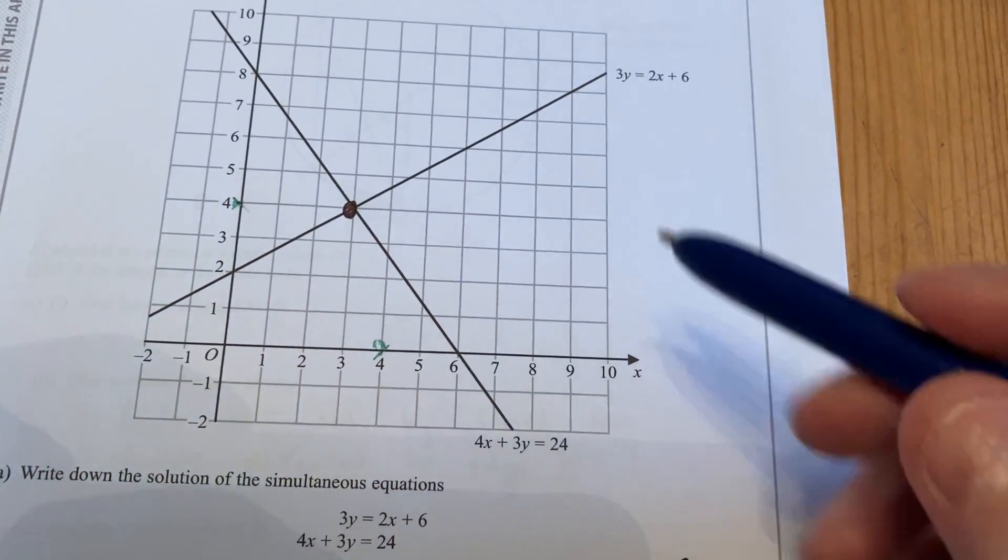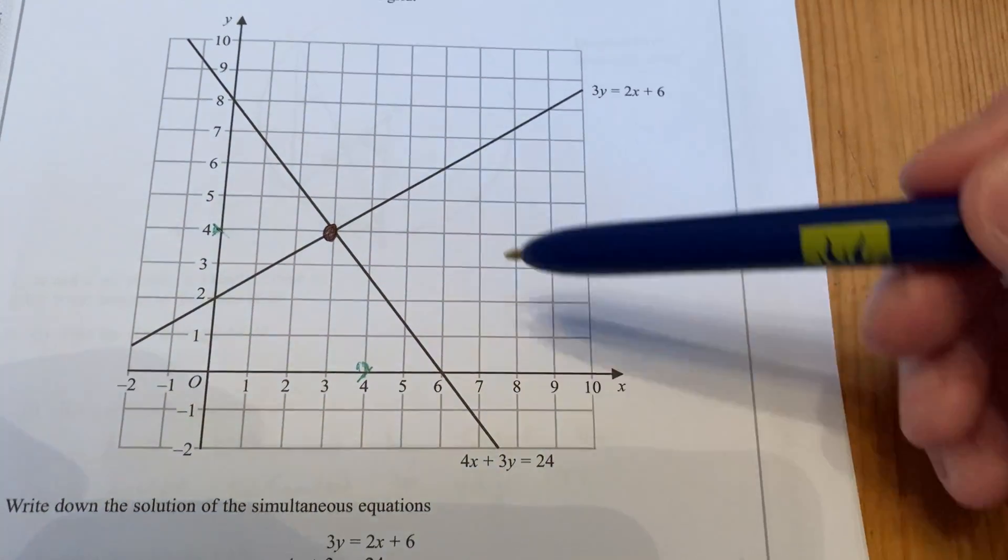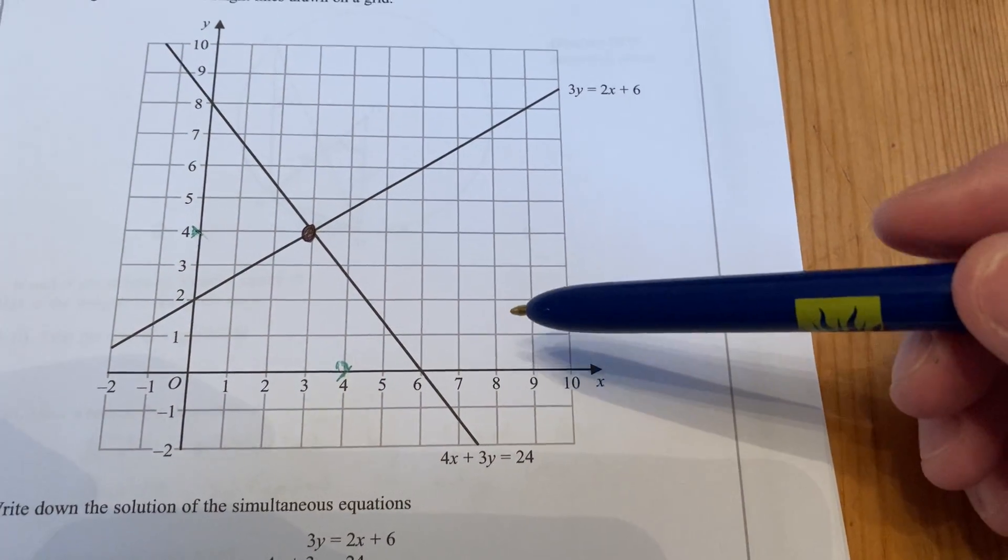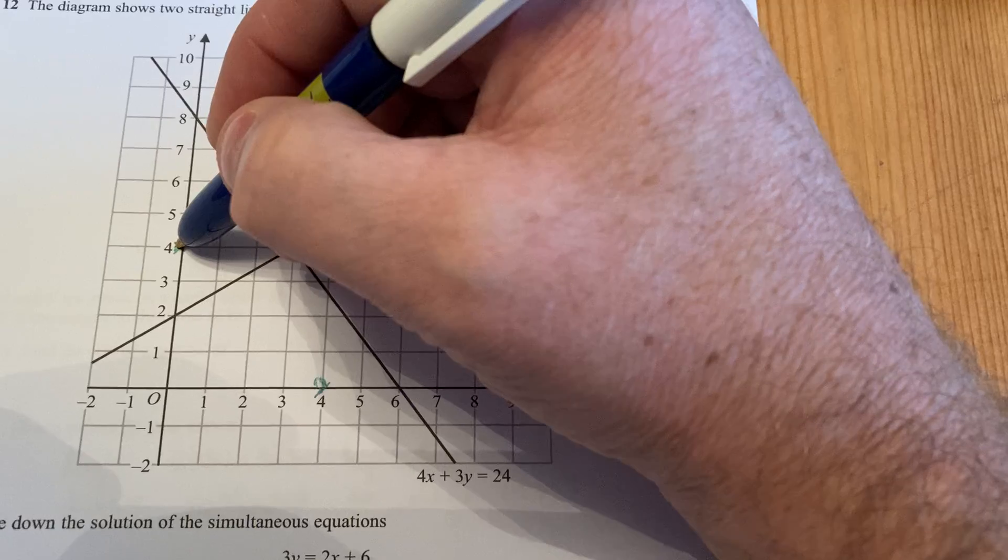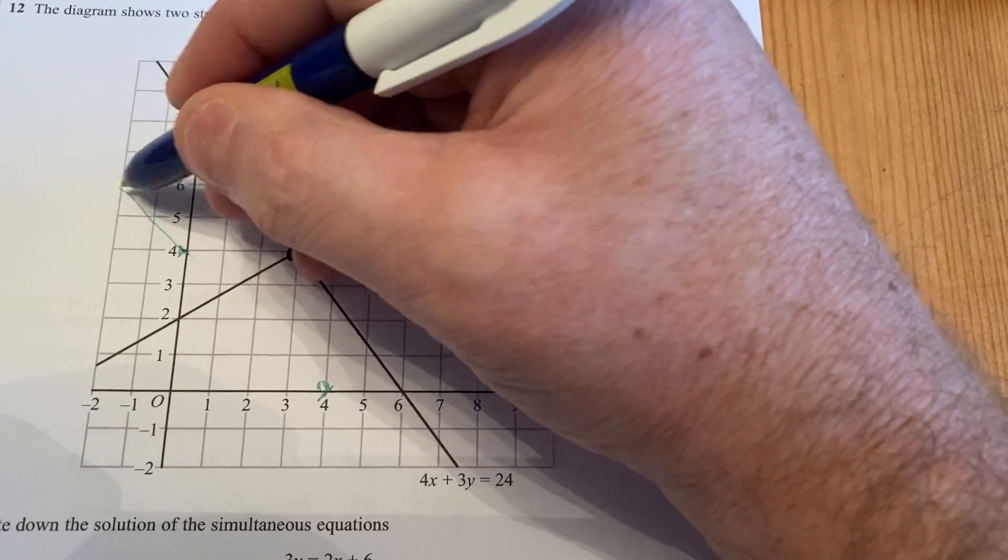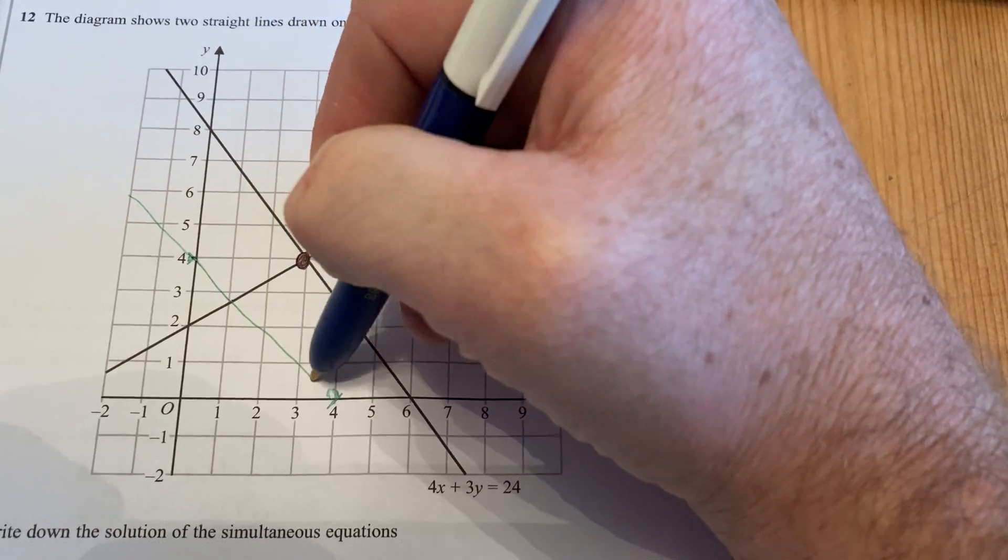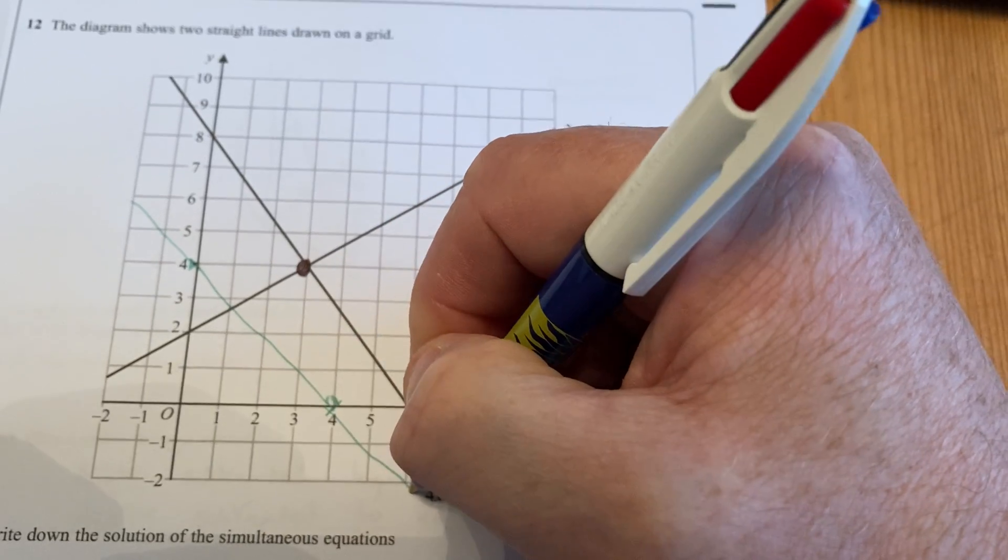x plus y equals 6 would do the same at 6 and 6, x plus y equals 9 would do the same at 9 and 9. So that line is the diagonal line coming down through, use your ruler when you do yours, through there.